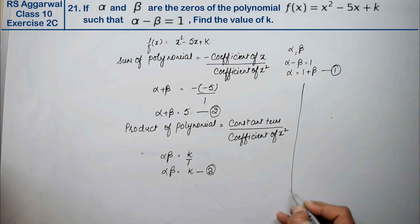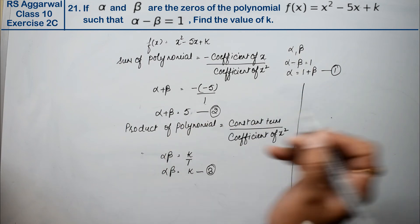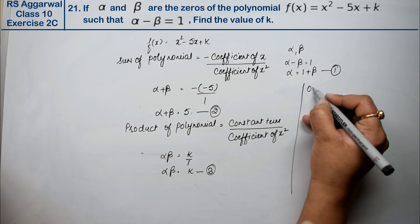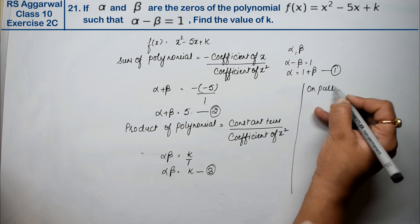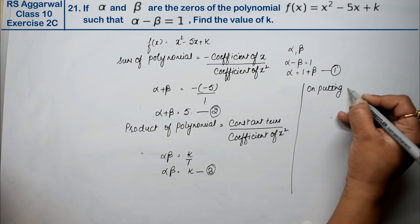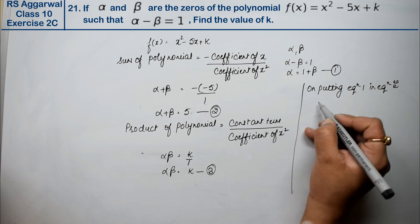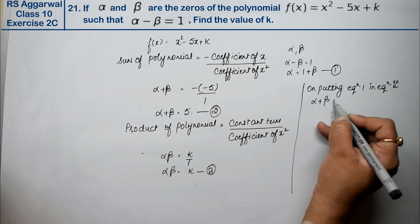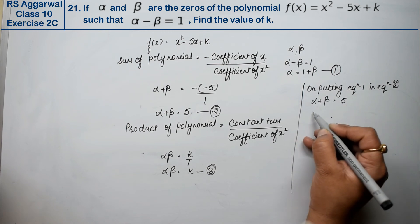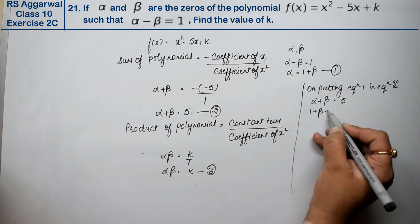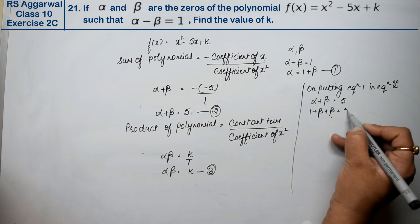We'll substitute the alpha value. On putting equation first in equation second, α + β was 5. Alpha value was 1 + β, so 1 + β + β = 5.